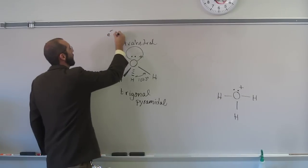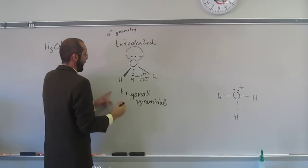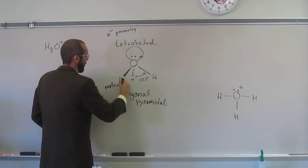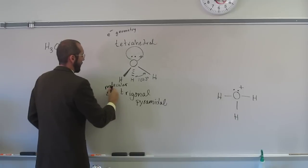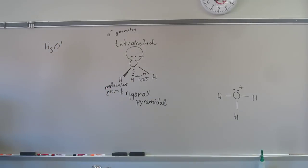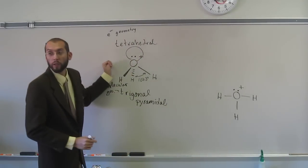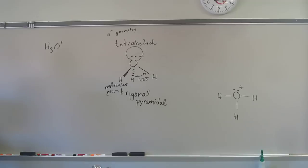So electronic geometry. And this is molecular geometry. Any other questions on this one? This thing over here is called the Lewis structure. This is the molecular structure, okay? So the Lewis structure is like a two-dimensional version of the three-dimensional molecular structure.